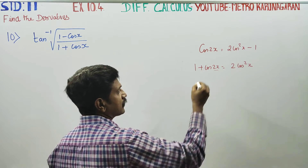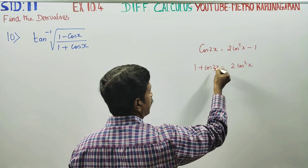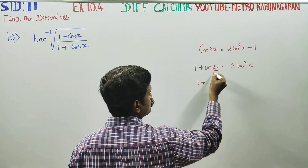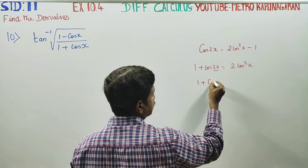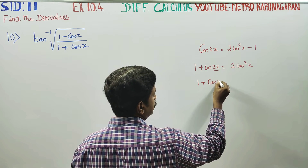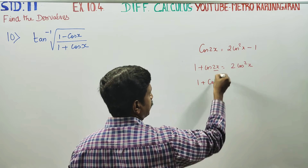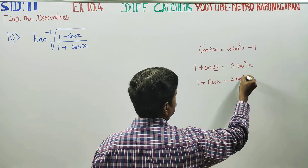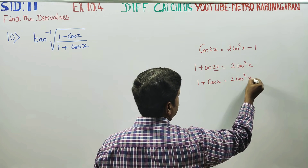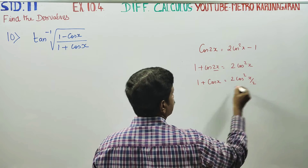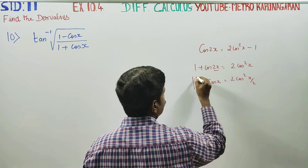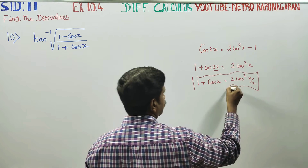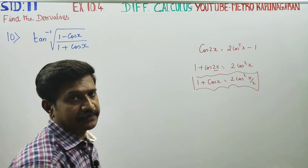This is the single angle formula. 1 plus cos 2x is written with angle x by 2, giving us 1 plus cos x equals 2 cos squared (x/2). Recall this as the double angle formula.